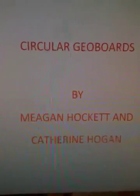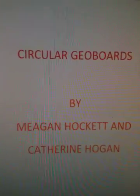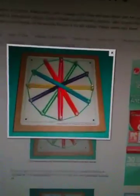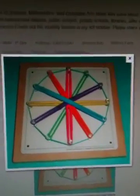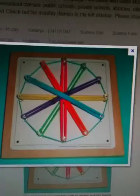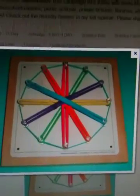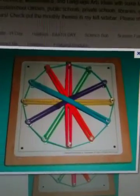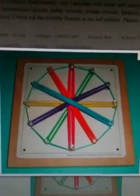So our lesson in this video is all about circular geoboards. This is one type of circular geoboard that can be made at home. It is made out of a bulletin board and some tacks along with some hair bands.